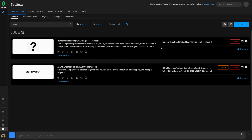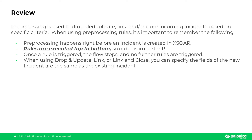Let's do a quick review of this video. Pre-processing is used to drop, deduplicate, link, and/or close incoming incidents based on specific criteria. Key points for XOR engineers: pre-processing happens right before an incident is created in XOR; pre-processing rules are executed top to bottom, so order is important; once a rule is triggered, the flow stops and no further rules are executed. Lastly, when using Drop and Update, Link, or Link and Close, you can specify that fields of the new incident match the existing incident, allowing you to deduplicate repeat events as they're brought in. Thanks for watching, and we'll see you in the next video.